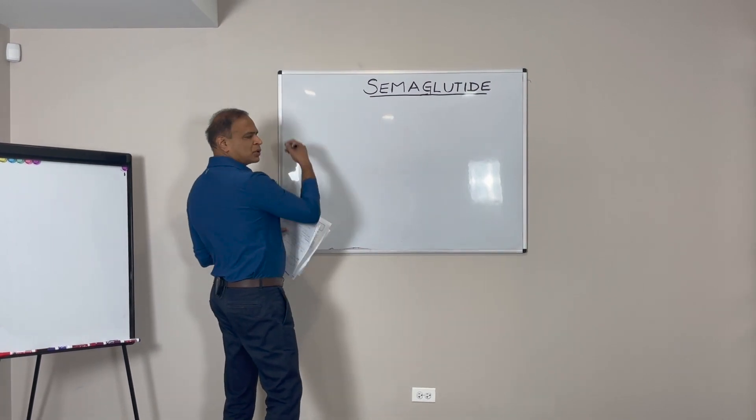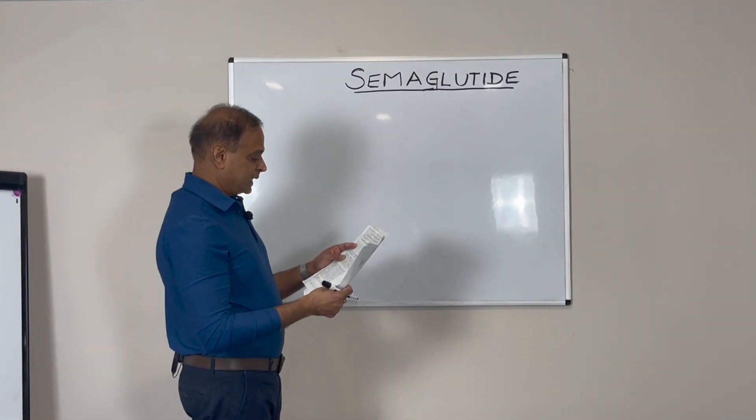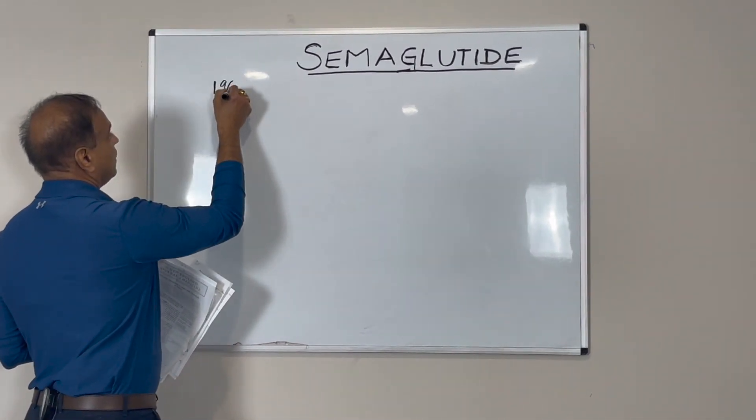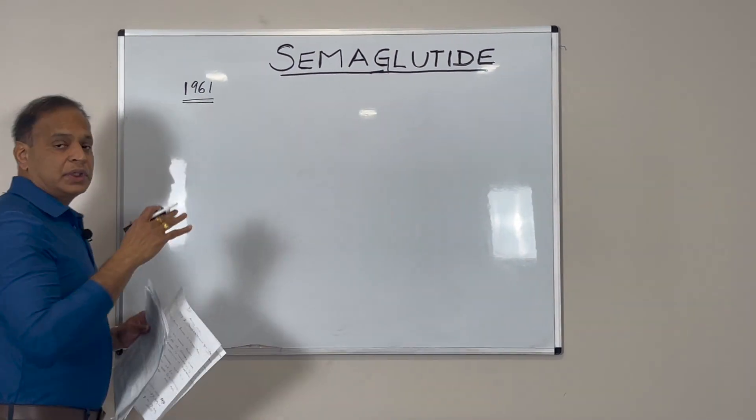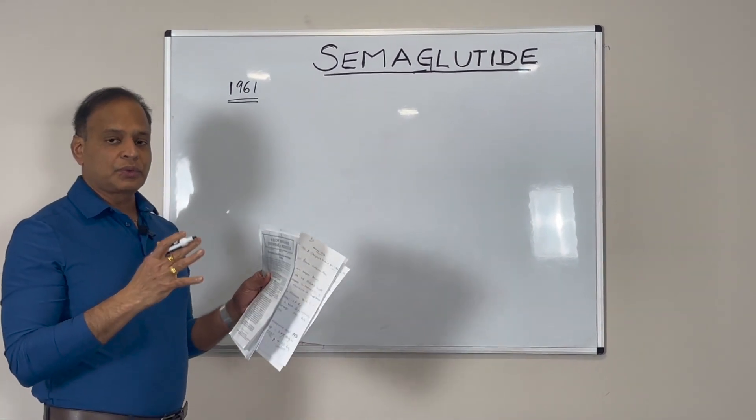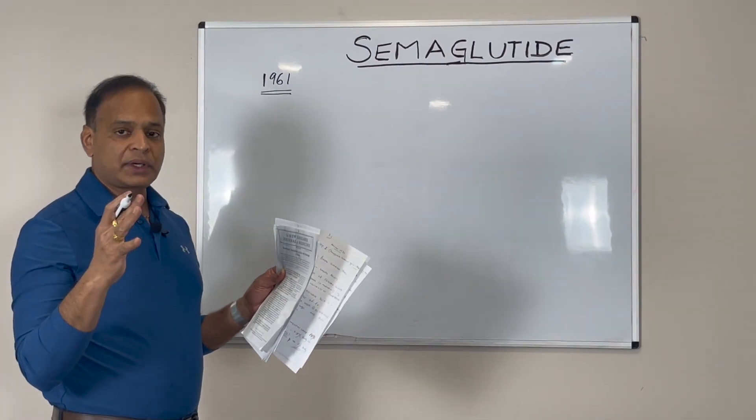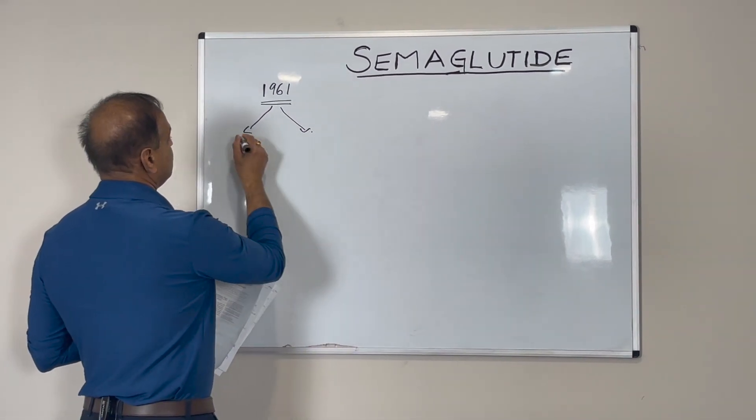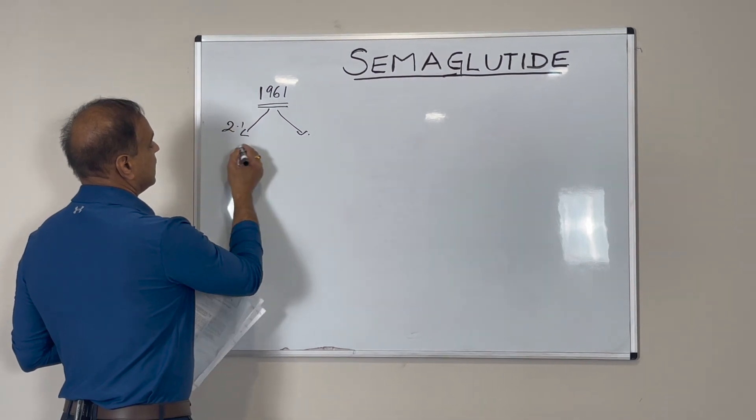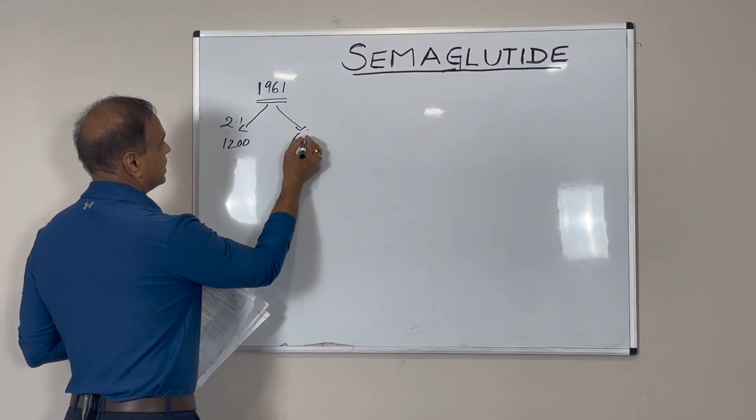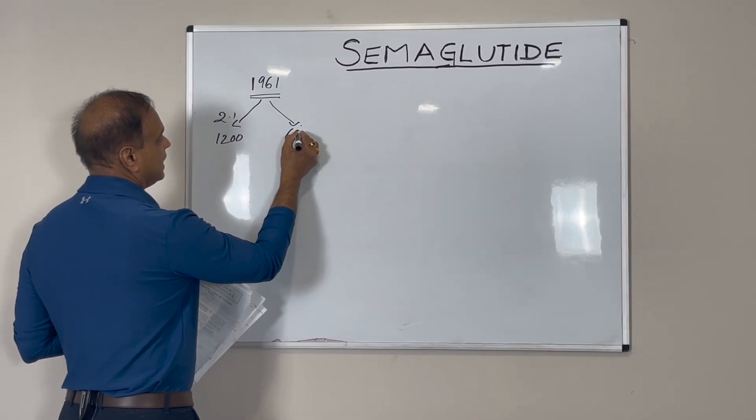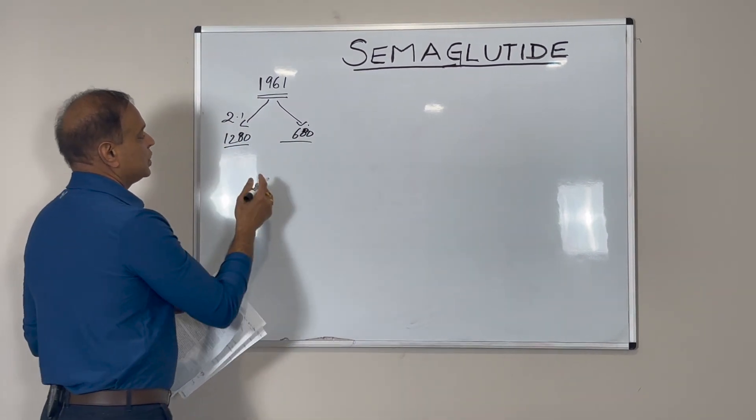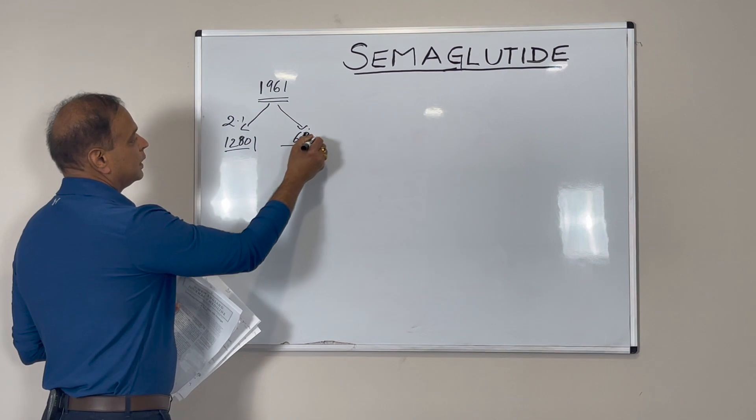They took 1,961 total patients and divided them into two groups in a two-to-one ratio. One group received the medication, about 1,200 patients, and one group received placebo, about 600 to 680 patients.